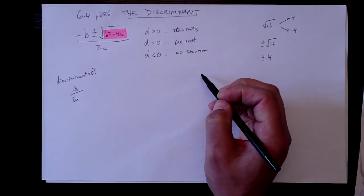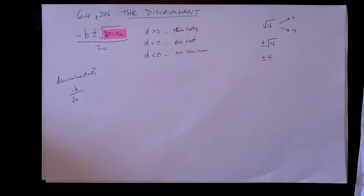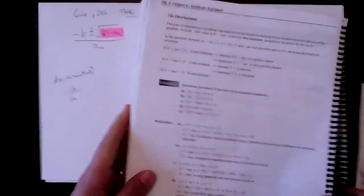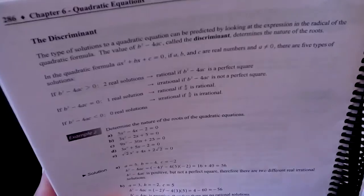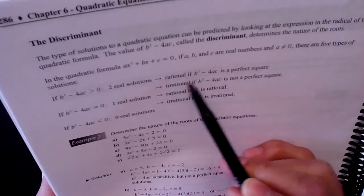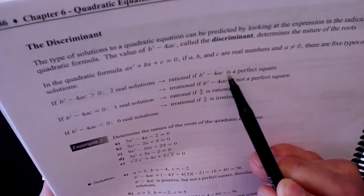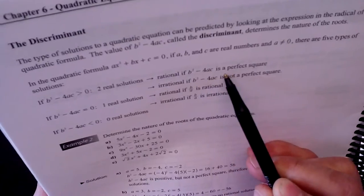Now, one more thing to note here, and this is something that the book does a terrible, terrible, terrible non-job of telling you about. It doesn't tell you anything about this. All it says is that it's rational if the discriminant is a perfect square.